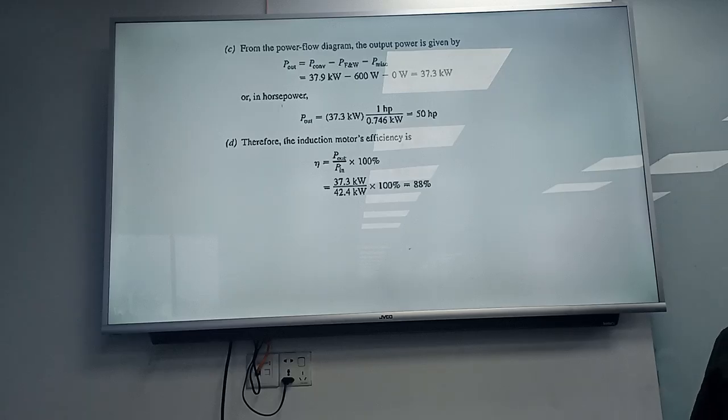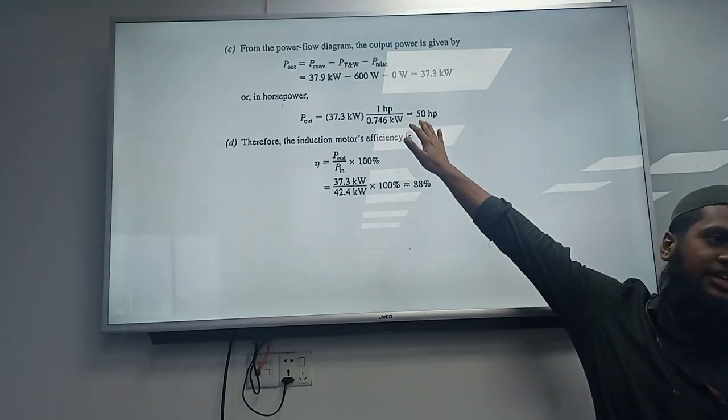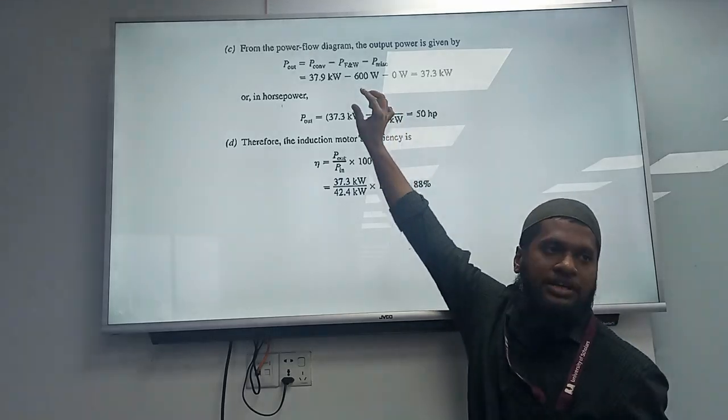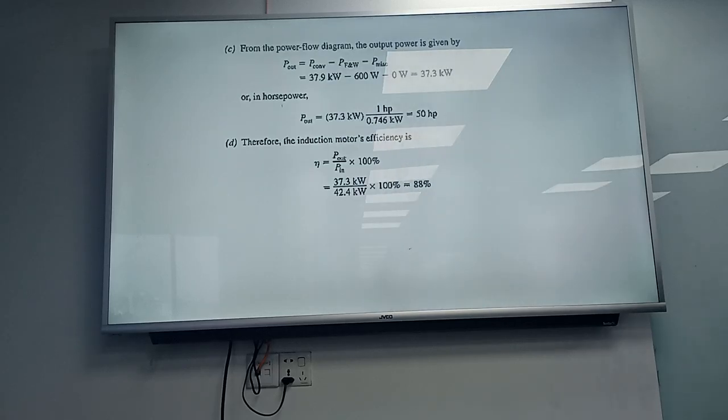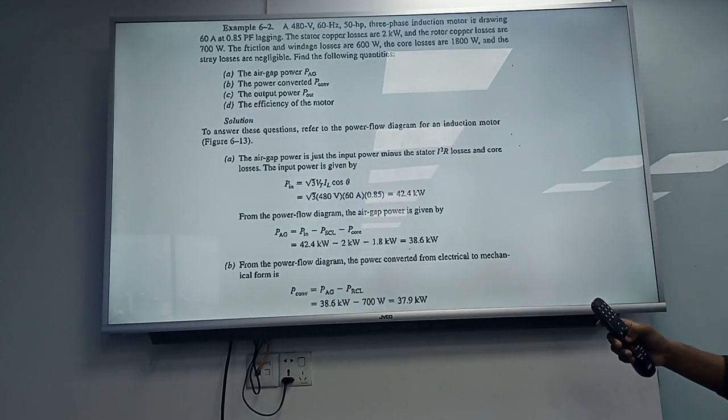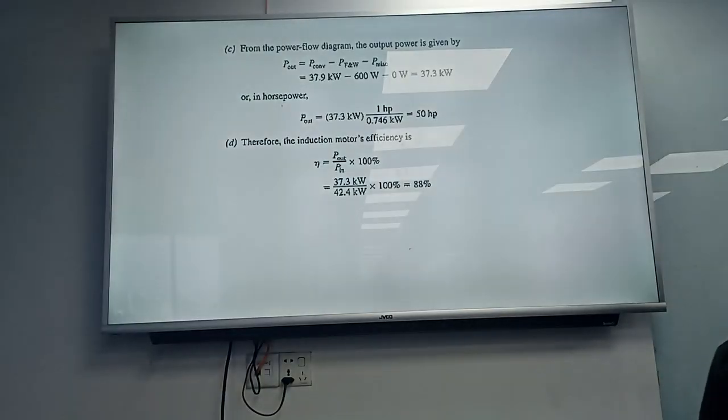The efficiency is Pout divided by Pin = 37.3 kW divided by 42.4 kW, which equals 88 percent.